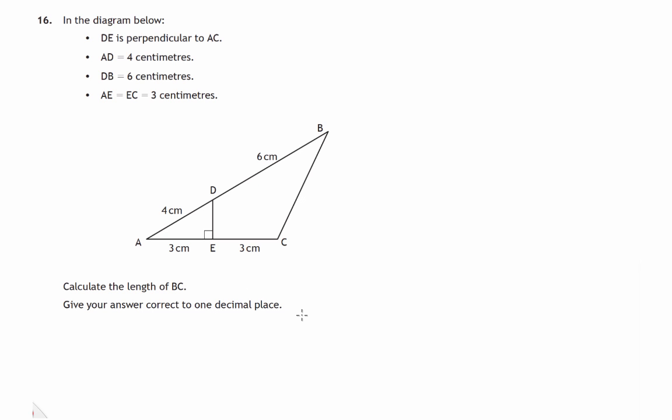It looks like a cosine rule problem. If we forget about this line ED, we have a large triangle ABC where we know the length of this side—it's four centimeters plus six centimeters—and we also know the length of this side: three centimeters plus three centimeters.